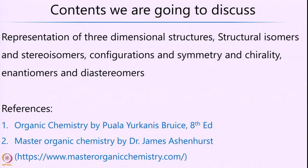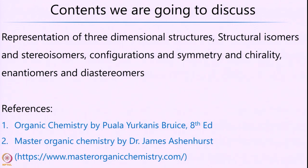The contents we are going to discuss are as follows. First, we will look at the three-dimensional representation of organic structures or molecules in space — why that is important and how it came about. Followed by, we shall look at what are called structural isomers and stereoisomers, what they mean, and their different properties, examples, and significance.